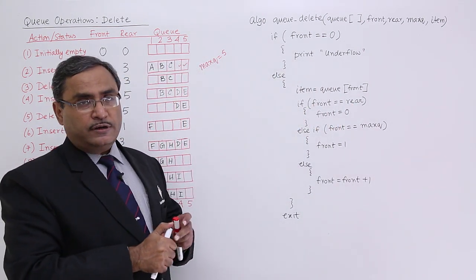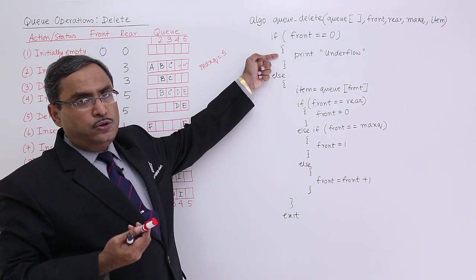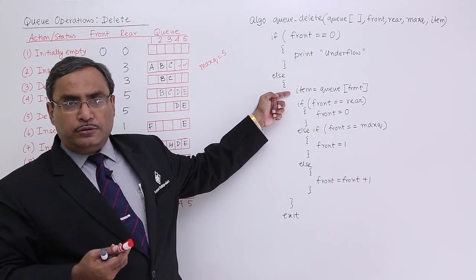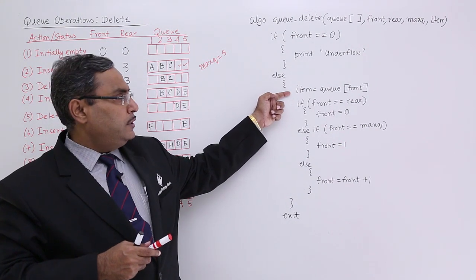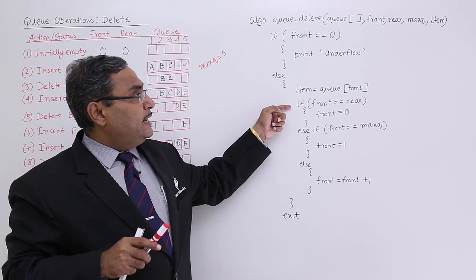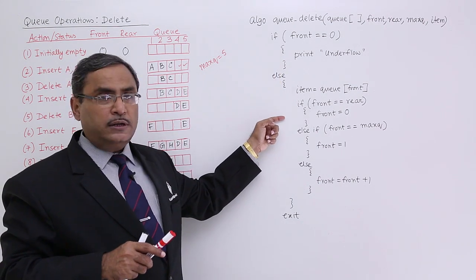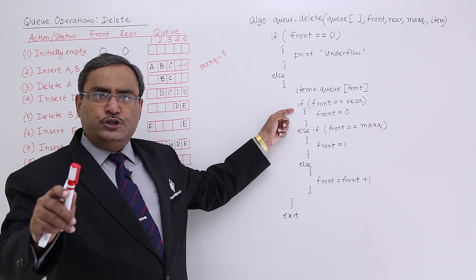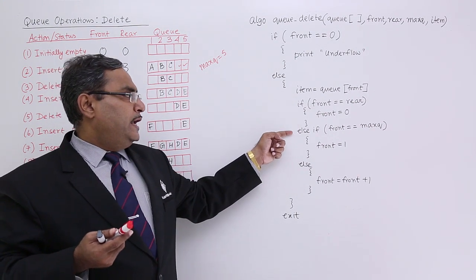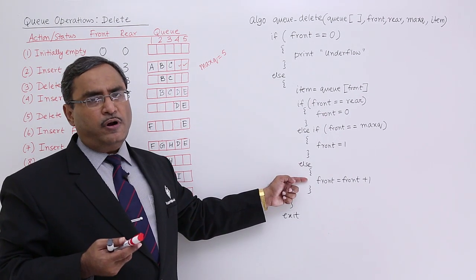Let us come to the algorithm — it is very easy after explaining this concept. If front is equal to 0, then print underflow, meaning there is no scope to perform any deletion operation because there was no data. Else, item is equal to q[front], meaning I am picking up the value from the front location. If front is equal to rear, that means only one data is there — front is equal to rear and not equal to 0 — so after deletion front will become 0, meaning no data will remain in the queue. If front is equal to max_queue, then front is equal to 1; else the default case is front is equal to front plus 1, and exit.